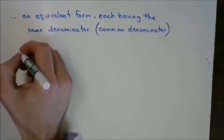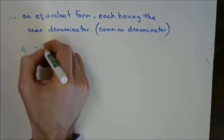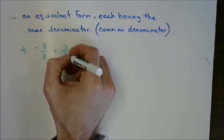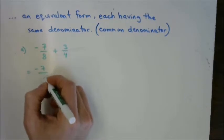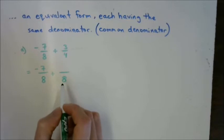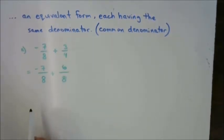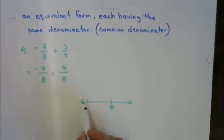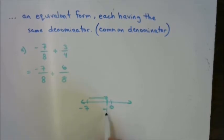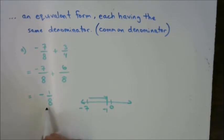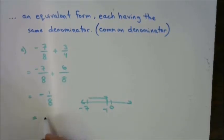Now we're going to get a final answer using the strategy we just practiced. The first question is negative seven-eighths plus three over four. Common denominator is eight, so we have negative seven over eight plus six over eight. We're starting at negative seven-eighths and adding six-eighths — it brings us all the way to negative one. So we have negative one-eighth. The negative sign can be attached to the one or left out front — just not in the denominator. This is negative one-eighth, or negative 0.125 as a decimal, but we're leaving answers in rational fraction form.